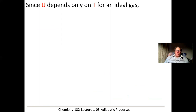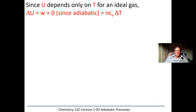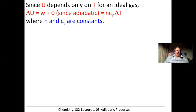Internal energy U depends on temperature for any ideal gas. As we heat it up, particles move faster and internal energy increases. Delta U equals q plus w, so in the adiabatic case where q is zero, delta U equals work, which equals nCv·ΔT. We use Cv — the specific heat capacity at constant volume — because n and Cv are both constants, and Cv is always used to calculate delta U.